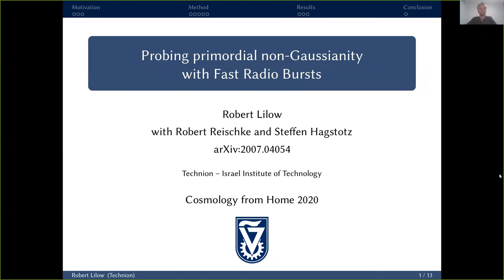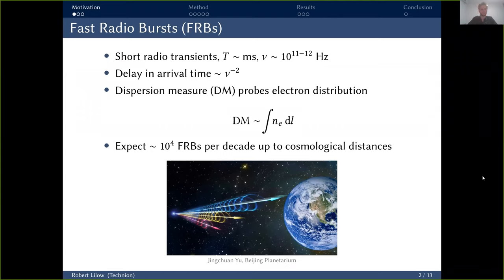Now to the talk. What I would like to tell you about today is how you can use fast radio bursts to probe primordial non-Gaussianity. This is a project done in collaboration with Robert Reischke and Steffen Hagstotz and is published in this arXiv paper. Let me start with a very brief introduction to fast radio bursts or FRBs. Those are very short radio transients, on the order of a few milliseconds only, in the frequency range of a few hundred megahertz to a few gigahertz.